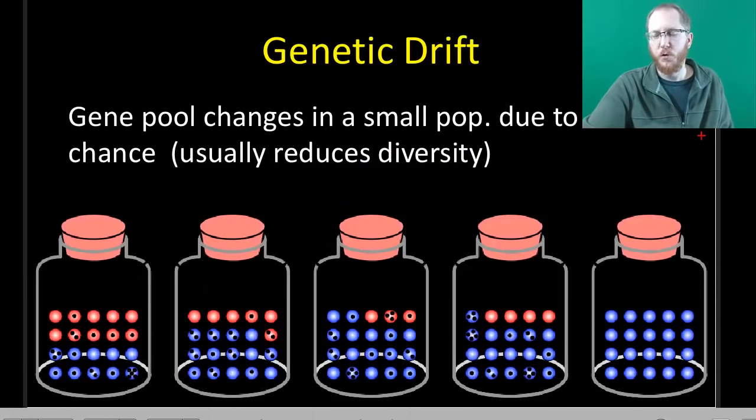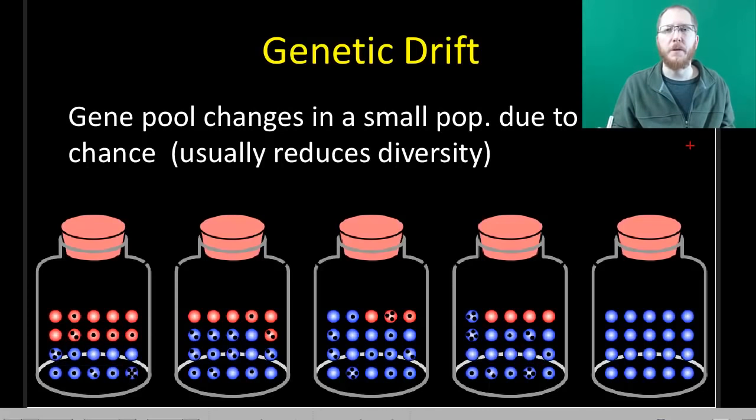Welcome to the second half of chapter 23, and we're going to pick up with the five types of microevolution. So we talked about Hardy-Weinberg and how to maintain things at equilibrium, so no evolution. Now we're going to talk about the opposite of those five things, which will lead to evolution.